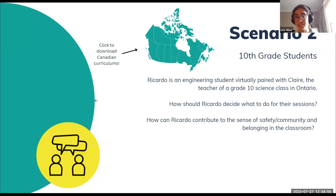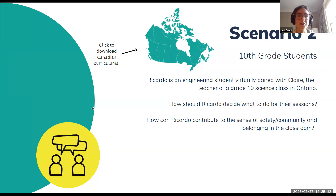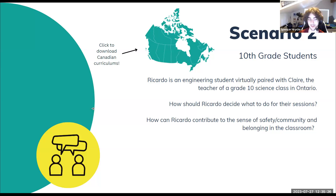For our first scenario, we have Rachel, who is a civil engineer paired with Paulo, the teacher of a class of fifth grade students in Kamloops. Rachel knows civil engineering inside and out but this is her first time helping to teach fifth graders. The two questions to think about are: how can Rachel prepare for her first conversation with Paulo, and how can Rachel contribute to the sense of safety and belonging in the classroom?